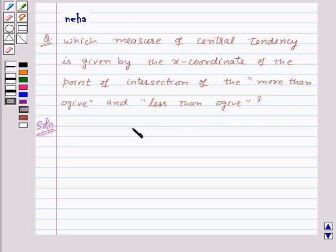So that means median is given by the x-coordinate of the point of intersection of the more than ogive and less than ogive. Thus, median is the required answer to this question.